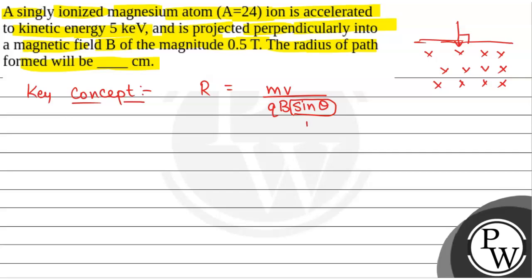So we will have sin theta equals 1. So r will be equal to mv upon qB in case of perpendicular projection.